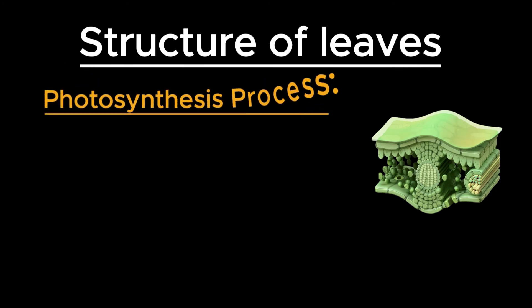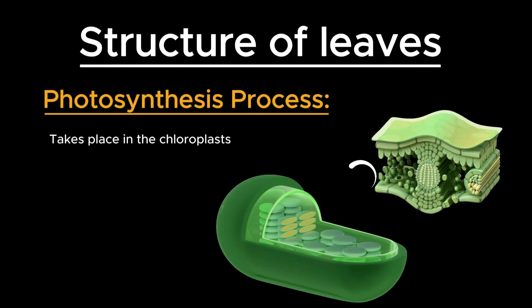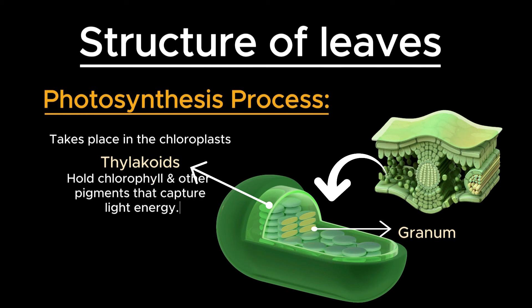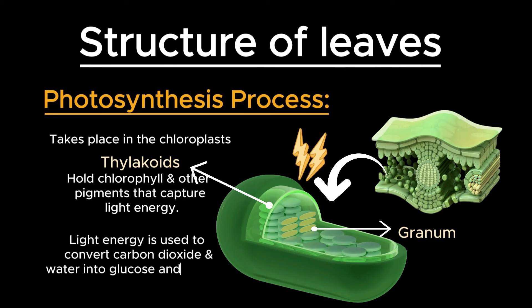Within the mesophyll cells, photosynthesis takes place in the chloroplasts. Chloroplasts contain thylakoids, which are stacked into structures called grana. These thylakoids hold chlorophyll and other pigments that capture light energy. During photosynthesis, light energy is used to convert carbon dioxide and water into glucose and oxygen. The overall process can be summarized by this equation.